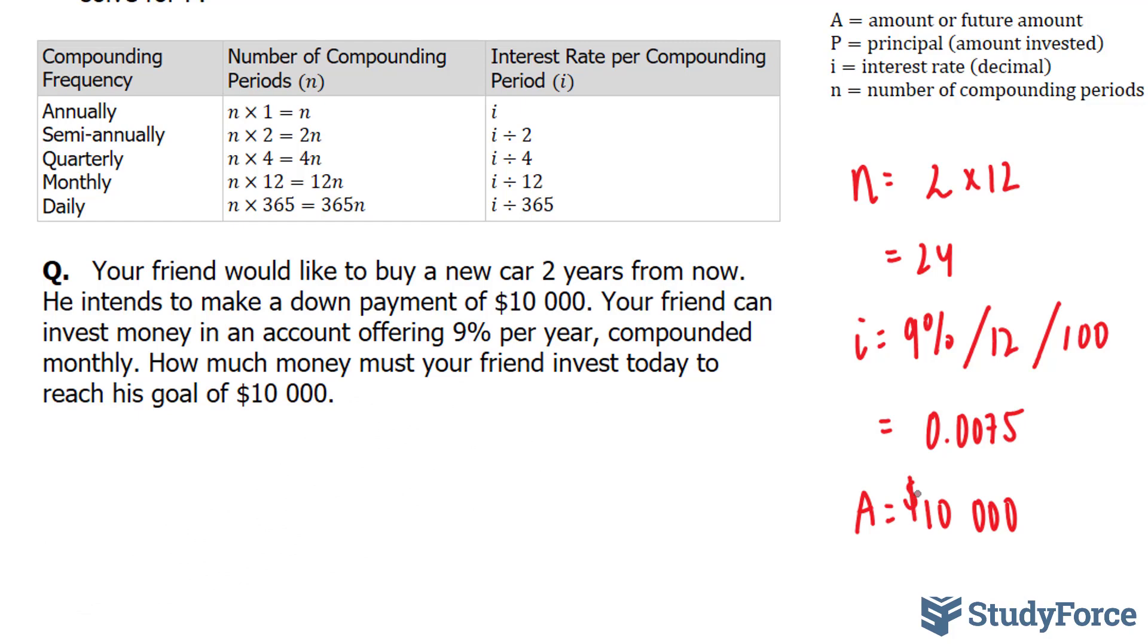So let's find out how much this person has to invest right now inside of this bank account that offers this percentage of interest to obtain $10,000 two years from now to buy his dream car. So the formula was A is equal to P bracket 1 plus I to the power of N.